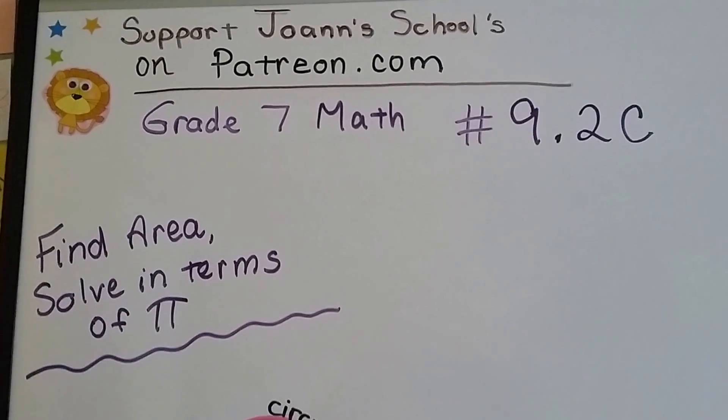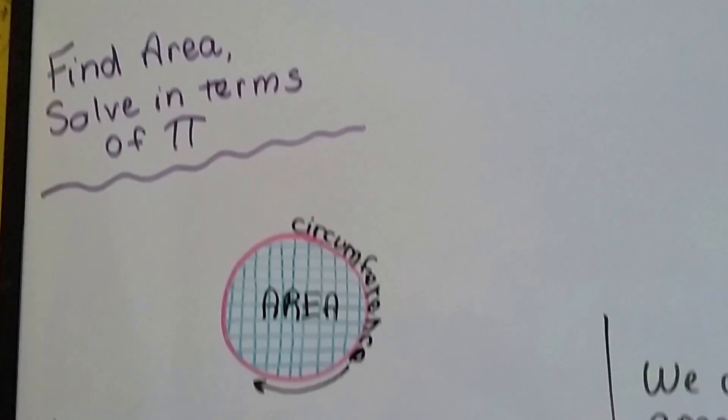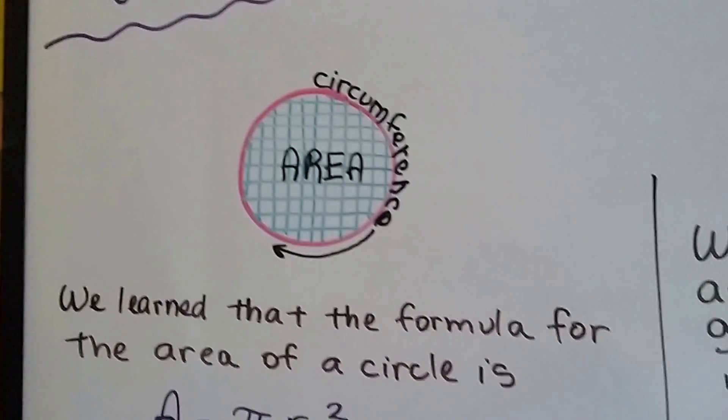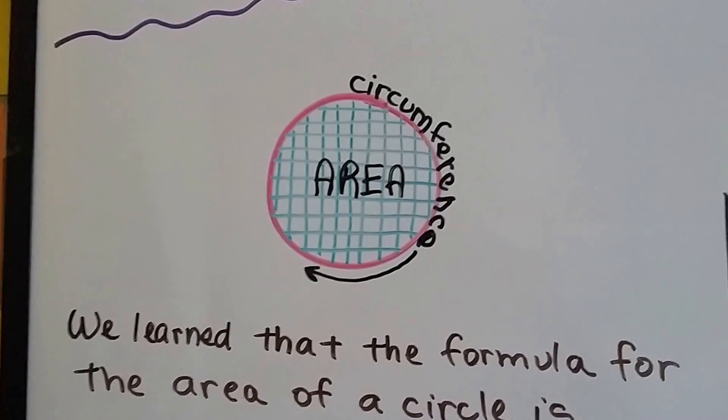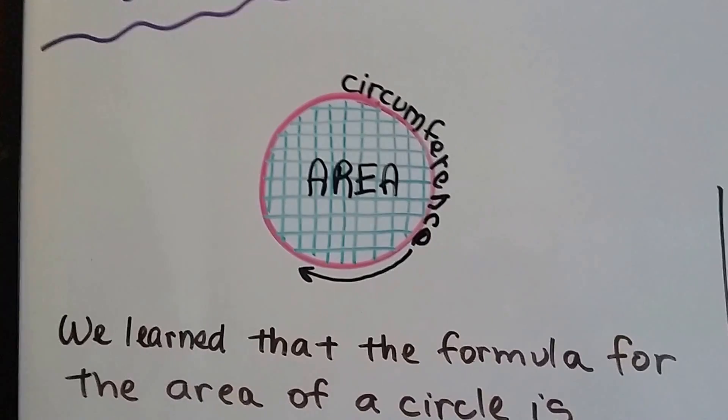Grade 7 math number 9.2c, find area, solve in terms of pi. See our little circle here? We've got all our little square units of area on the inside. You can see the circumference going around the pink line around the outside.